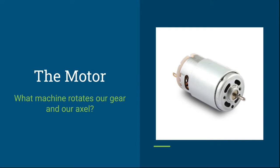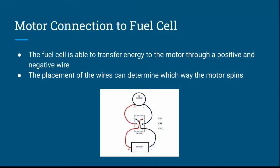The motor: what machine rotates our gear and our axle? The fuel cell is able to transfer energy into the motor through a positive and a negative wire. In this picture, you can see the battery is essentially the fuel cell, with one negative side and one positive side that transfers energy into the two sides of the motor. If you put the negative wire on the left port and the positive wire on the right port of the motor, it changes the way the motor spins — one side spins left, the other spins right.